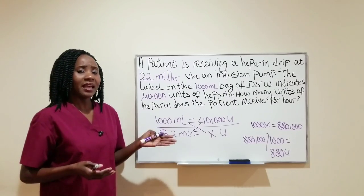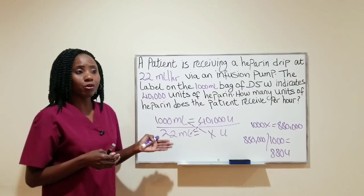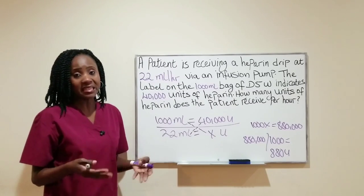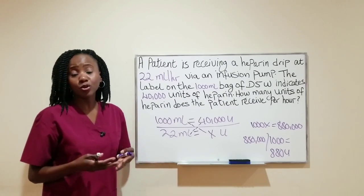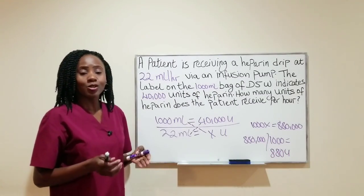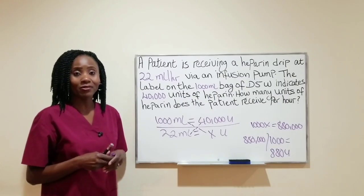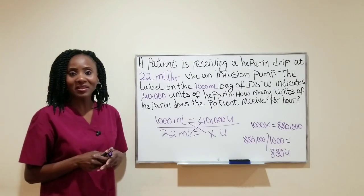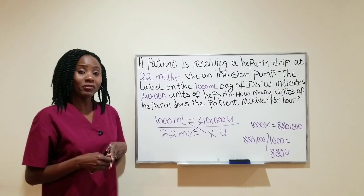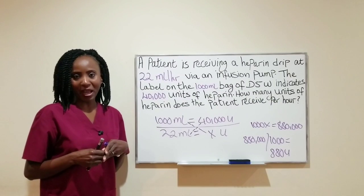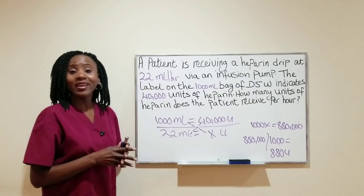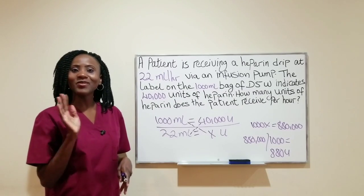I used the ratio and proportion method here. If you have another method that is easier for you, it's okay to use that method as long as you arrive at the correct answer. So there you have it — we've gone over our NCLEX drug calculation question. If you found this video useful, don't forget to like and subscribe, and feel free to leave your comments in the comment section below. Thanks for watching and see you next time.